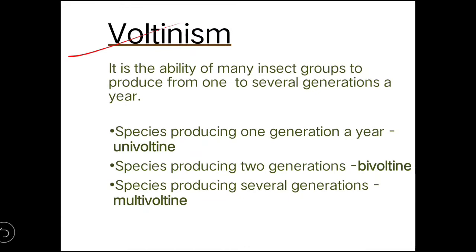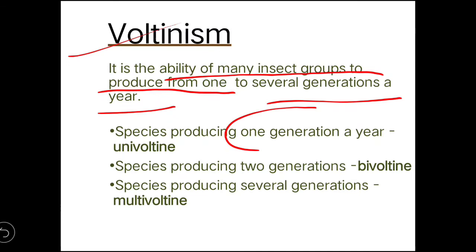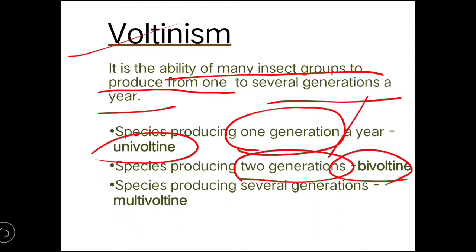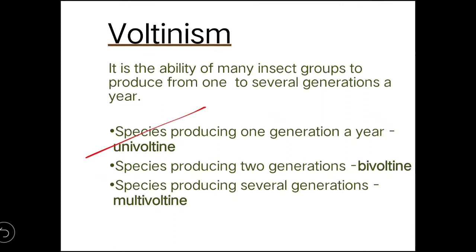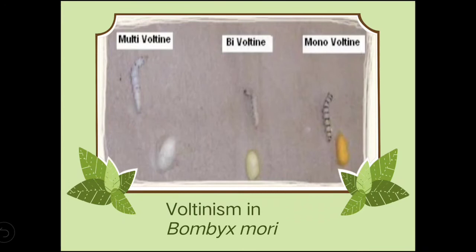Voltinism is the ability of many insect groups to produce one to several generations per year. An insect producing one generation per year is univoltine, two generations per year is bivoltine, and several generations per year is multivoltine. Silkworms can be univoltine, bivoltine, or multivoltine, making voltinism a major characteristic of silkworms.